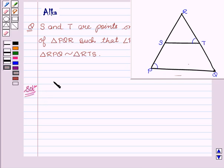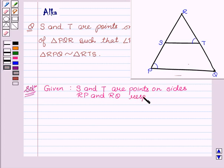Let's start with the solution. We are given S and T are points on sides RP and RQ respectively. We are also given that angle P equals angle RTS.